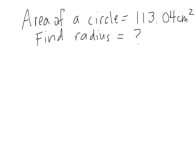Always start with writing your formula. Area of a circle is equal to pi times r squared. In this case, we need to find the radius.